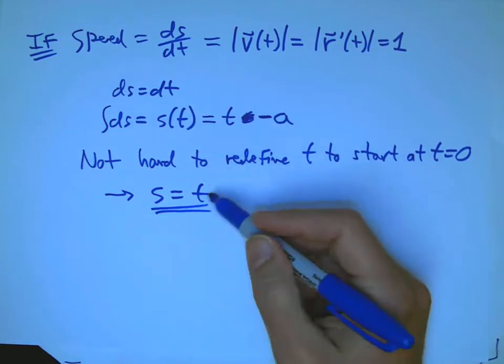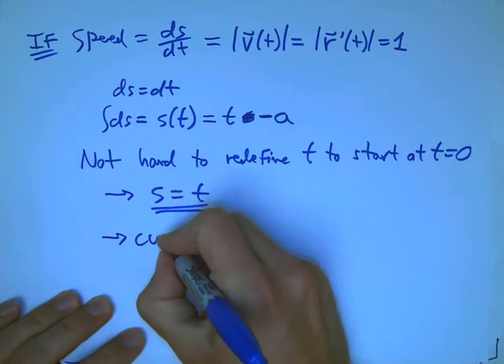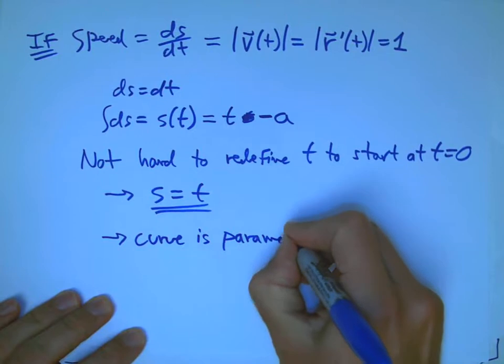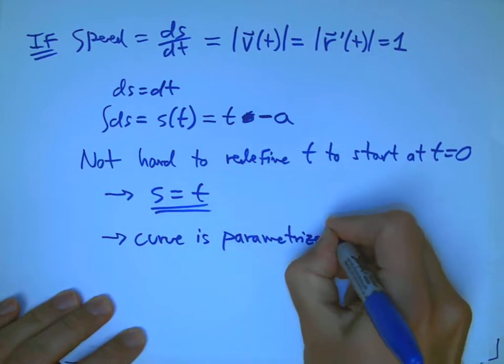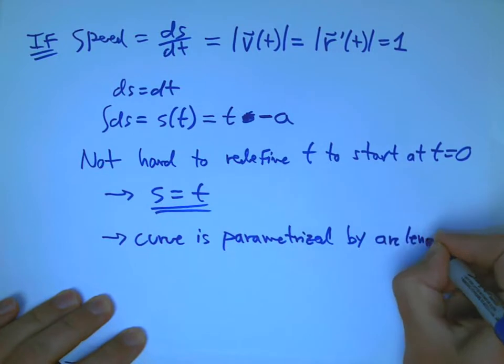And this is wonderful. What it means is that if you've got this situation, it means your parameter has a very geometrical meaning. And it means your curve is parametrized by arc length.